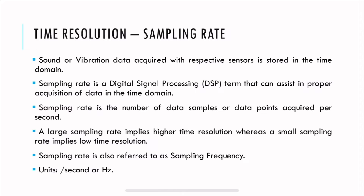What is time resolution? When you capture sound or vibration, it is stored in the time domain. Sampling rate is the DSP term that assists in proper acquisition of data in the time domain. Sampling rate is the number of data samples acquired per second. For example, if you are acquiring 10 data points per second, then your sampling rate is 10 samples per second or 10 Hz. The unit of sampling rate is per second or Hz, and sampling rate is also referred to as sampling frequency.